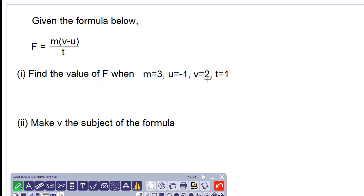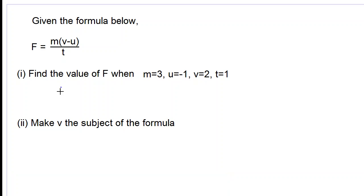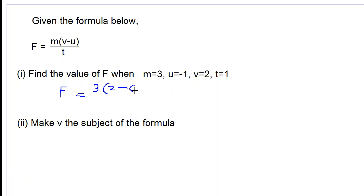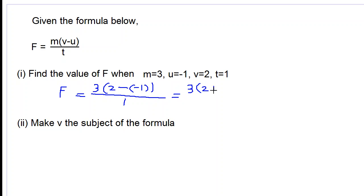So let's substitute these values for these letters. We have capital F being equal to M, which is now 3, multiplied by V, which is 2, subtract U, which is negative 1 — we put that in brackets — all over T, which is 1. So now we have 3 open brackets, 2 subtract negative 1, which is 2 plus 1, since subtract negative gives positive, all over 1.